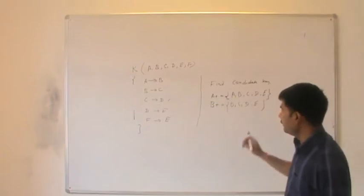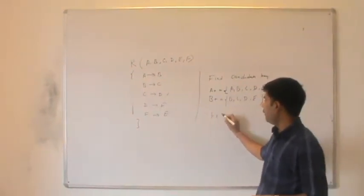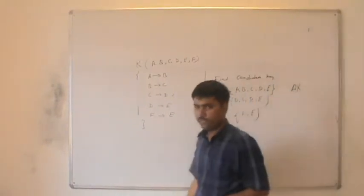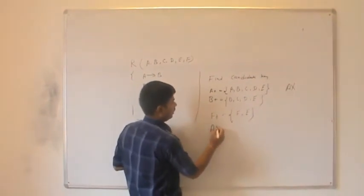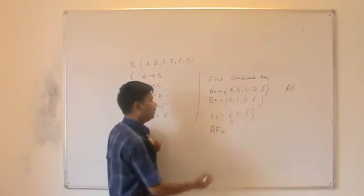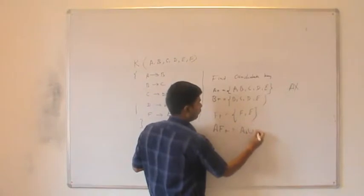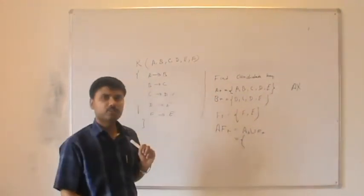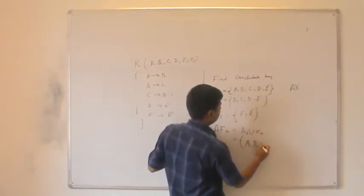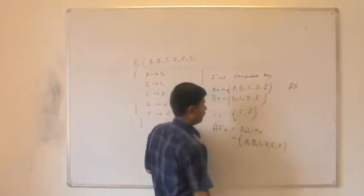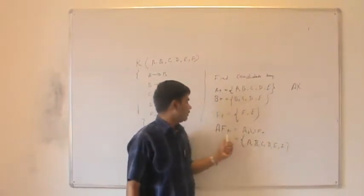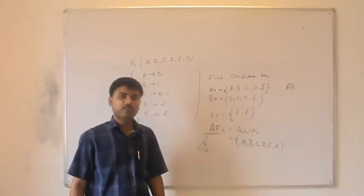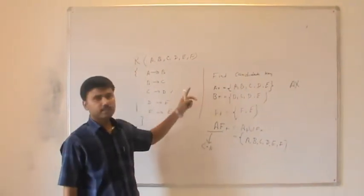Taking the closure of AF: it is the union of A+ and F+, which gives all attributes A, B, C, D, E, and F — the complete set of attributes of the given relation. Since all attributes are reachable from AF, AF is a candidate key. This is the answer.